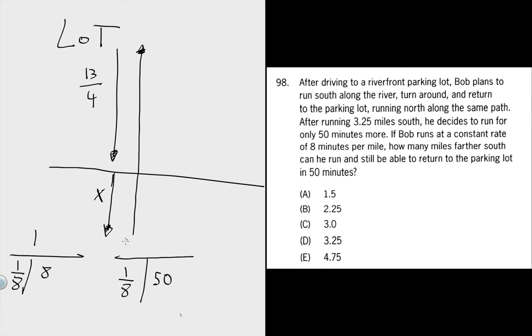So we definitely have an x, this one. We definitely have a 13 over 4, because we need to backtrack that whole distance.